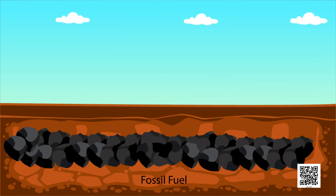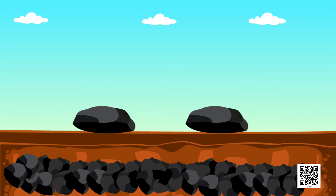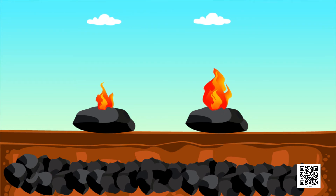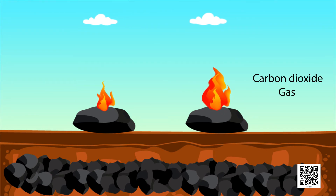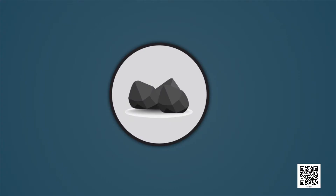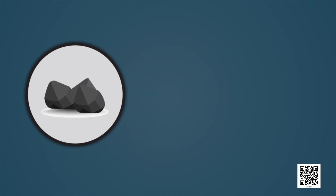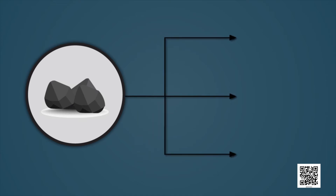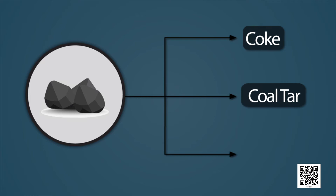When heated in air, coal burns and produces mainly carbon dioxide gas. Let us now have a look at the useful products we get by the processing of coal in industry. These useful products are coke, coal tar and coal gas.